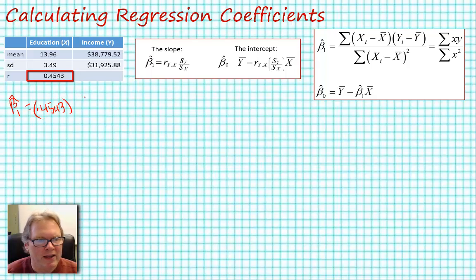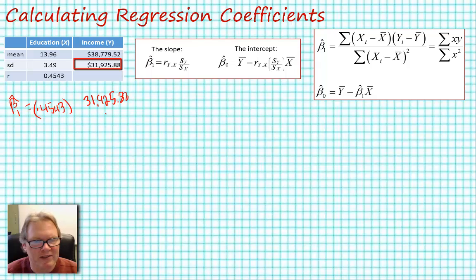So our beta hat sub 1 is going to be equal to the correlation coefficient 0.4543 multiplied by the ratio of the standard deviation of y to the standard deviation of x. In this case that's the $31,925.88 divided by 3.49.